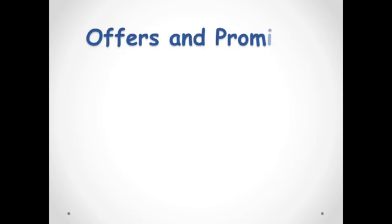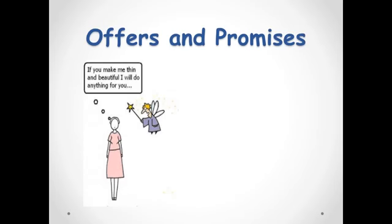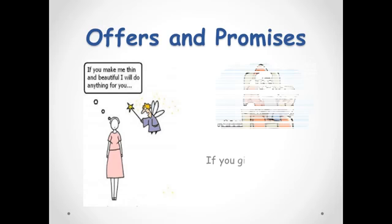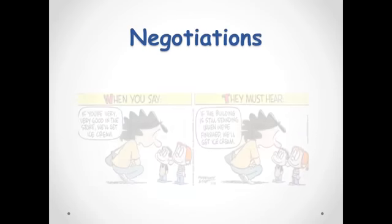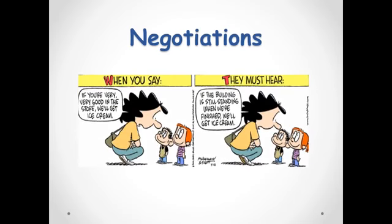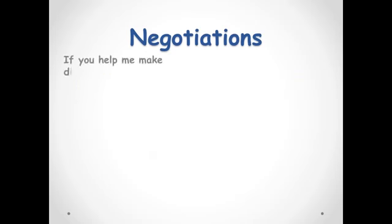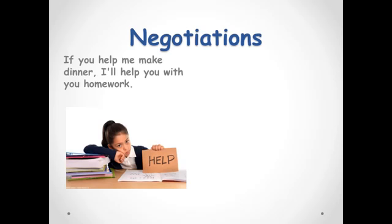Offers and promises. If you make me thin and beautiful, I'll do anything for you. If you give me your email address, I'll put you on my mailing list for next year. Negotiations. If you're very, very good in the store, we'll get ice cream. If the building is still standing when we're finished, we'll get ice cream. If you help me make dinner, I'll help you with your homework. If you lend me five pounds, I'll buy a drink later.